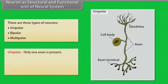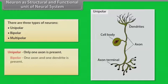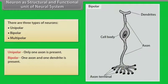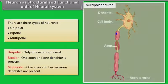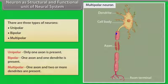Unipolar neurons have only one axon present. Bipolar neurons have one axon and one dendrite. Multipolar neurons have one axon and two or more dendrites present.